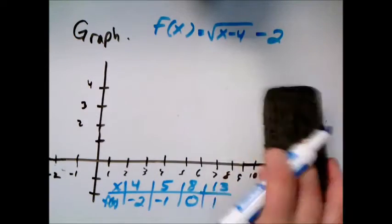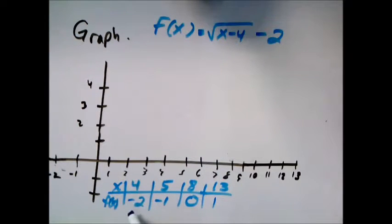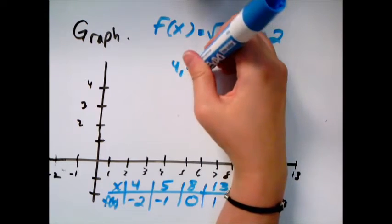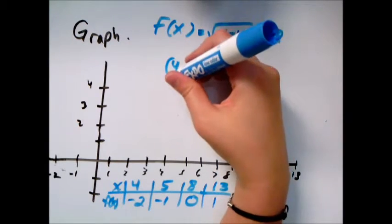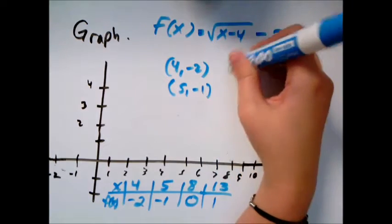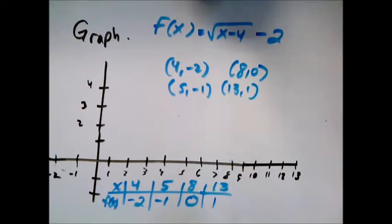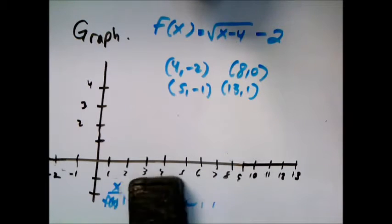And so now notice I have my leftmost point 4, negative 2, and then I have 3 other points. So 4, negative 2 is over 4 down 2 running into my graph here. We'll write down the points: 4, negative 2; 5, negative 1; 8, 0; and 13, 1.